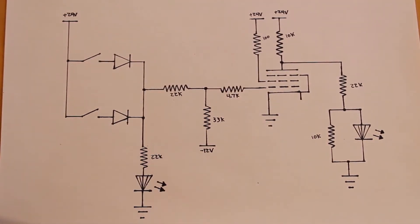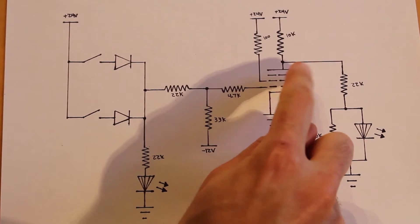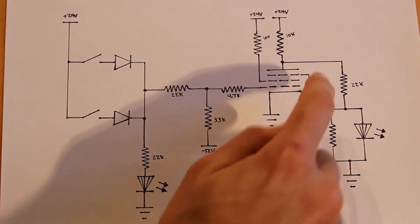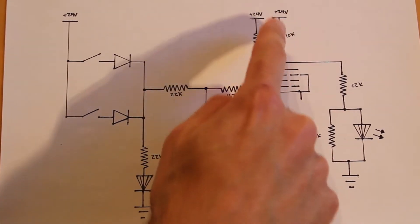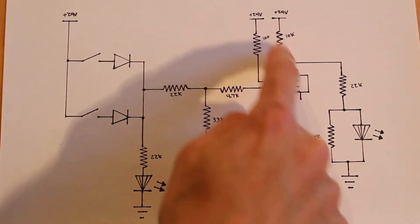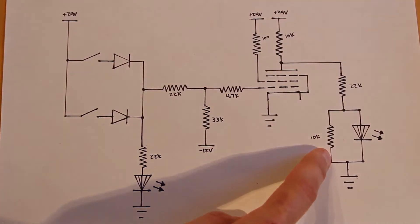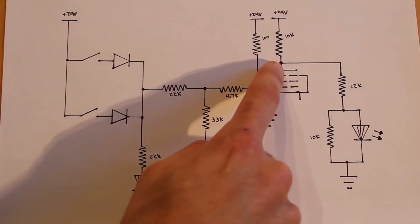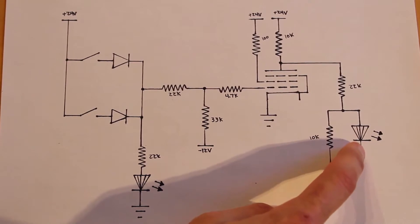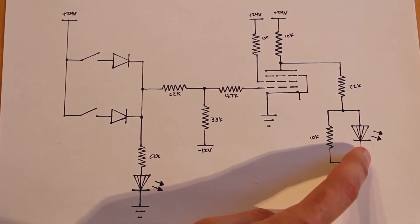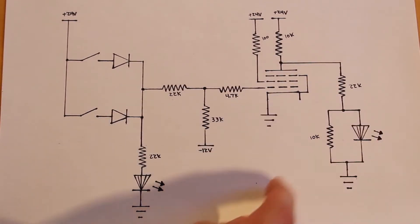We're using a 6AU6 pentode here. The suppressor grid is tied to the cathode, which is tied to ground, and the screen grid is tied to 24 volts through a 100 ohm resistor. We have a 10,000 ohm resistor from 24 volts into our plate, and our output comes just after that resistor. We send the output through a 22,000 ohm and 10,000 ohm voltage divider, since the output swings from about 6 to 24 volts — this keeps the LED off at logic low.